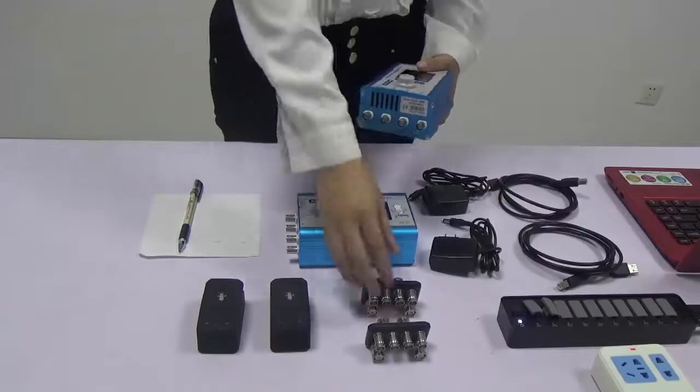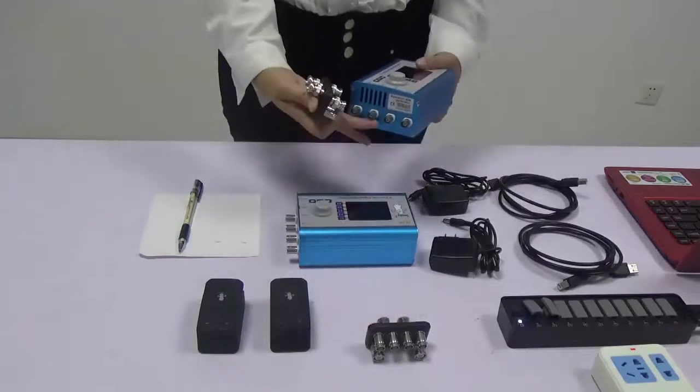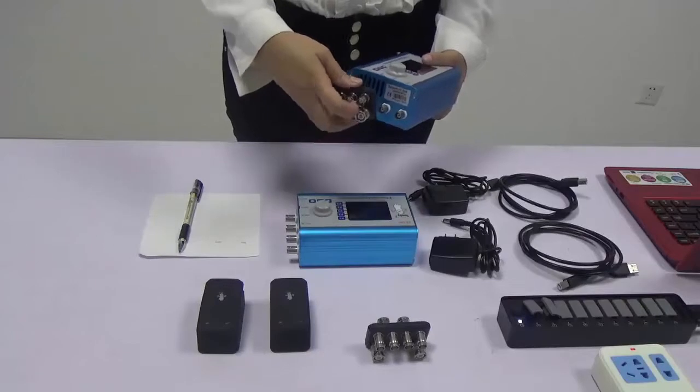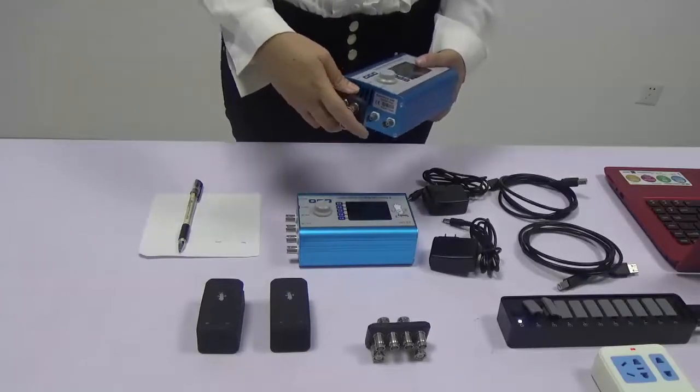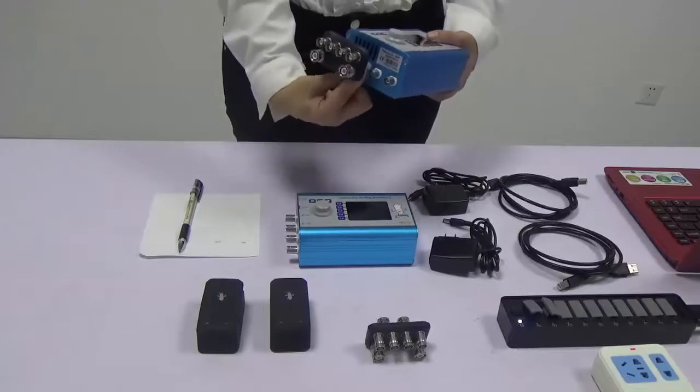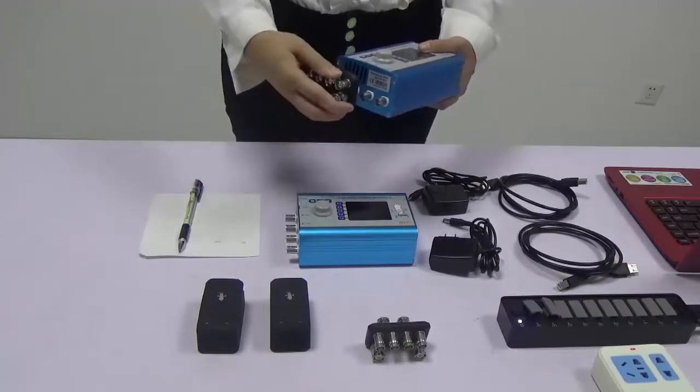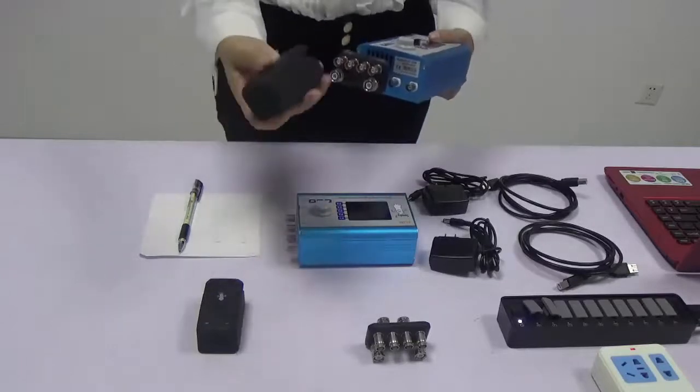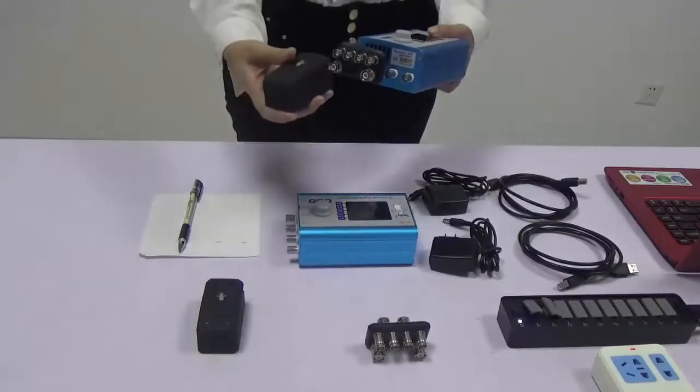Now, we connect the spooky boost to the out1 and out2 of the generator. We need to twist to lock the port. Then, we connect the spooky remote to the BM port of the spooky boost.